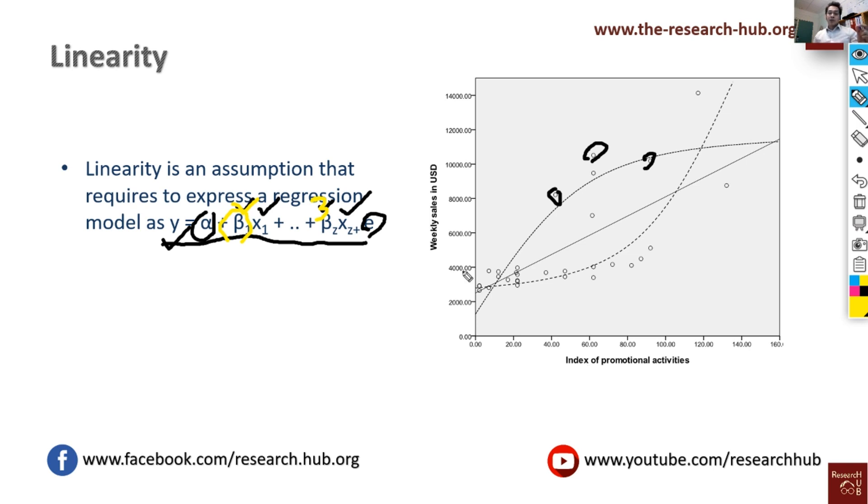But when we have curved lines, in those cases the value will be multiplied with some multiplicative terms. Like for one unit increase, the value of y increases by 2, for 2 unit increase it increases by 4, for 3 unit increase it increases by 16. Something like that. That is a nonlinear relationship.